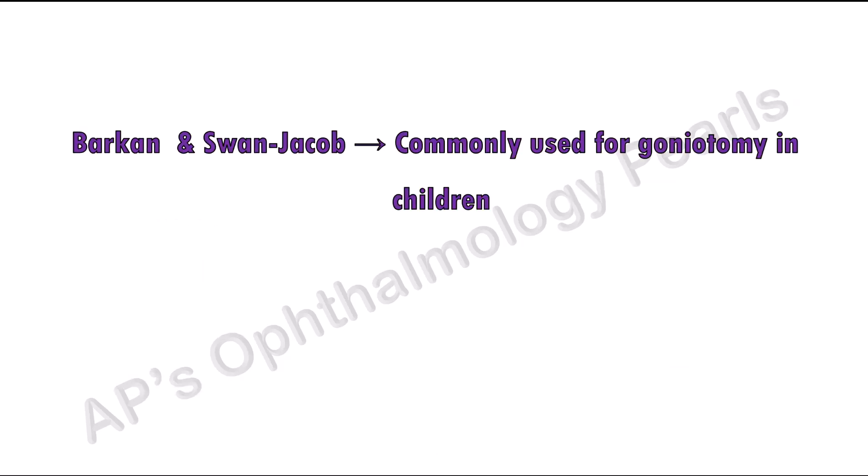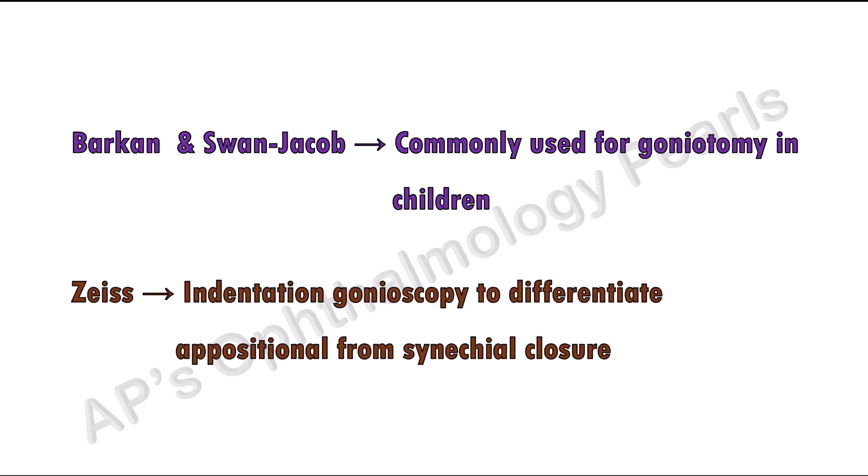The Swan-Jacob and the Barkan lens are used for goniotomy in children. Disease goniolenses are most commonly used for indentation gonioscopy — that is, when indented on the cornea, any simple appositional closure of the angle will result in opening of the angle, whereas if there is synechial closure due to peripheral anterior synechiae, the angle will not open.